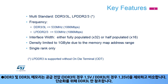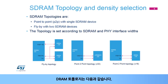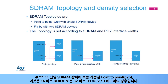DDR3 and DDR3L memories are similar, except for the supply voltage: 1.5 volts for DDR3 and 1.35 volts for DDR3L. For simplification, we refer only to DDR3L. DRAM topologies can be point-to-point, or P2P, applicable with a single SDRAM device on the board. This is the case with 16-bit DDR3L or 32-bit LPDDR2 or 3 memories.